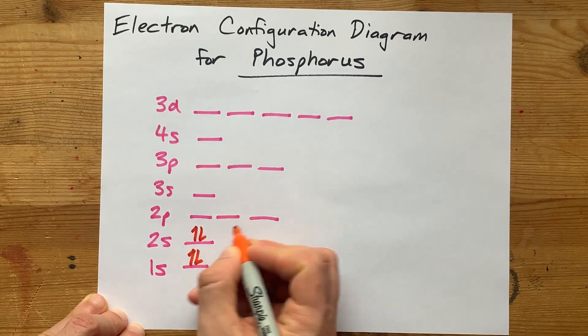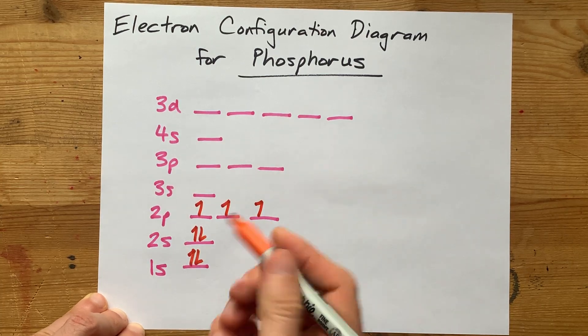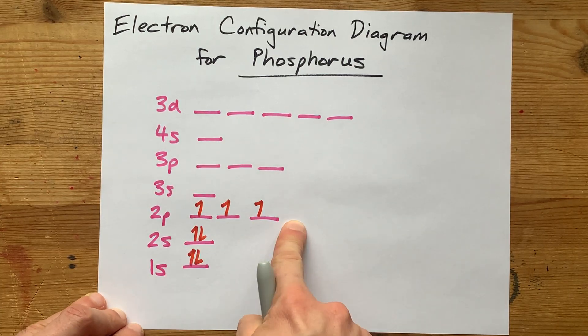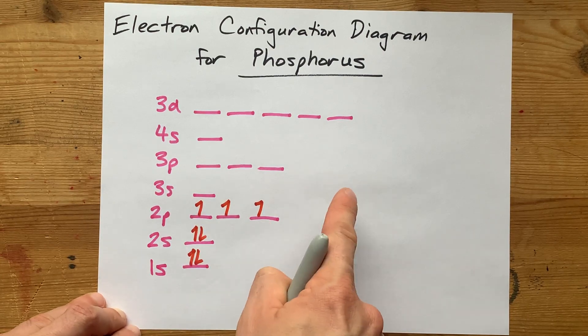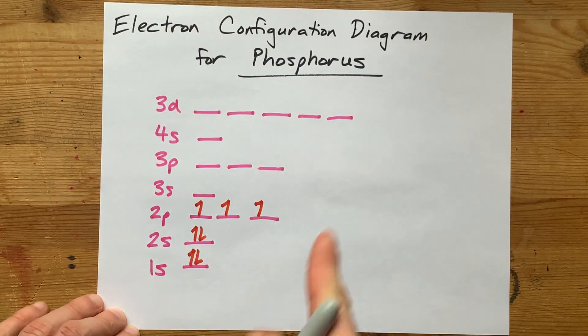3, 4, 5, 6, 7, and you spread them out before you double any up. That's Hund's rule.